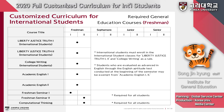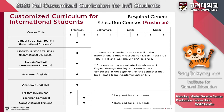Freshmen of Fall 2020 must take Liberty Justice Truth 1 and 2, College Writing, Academic English 1 and 2, Freshman Seminar 1 and 2, and Computational Thinking. Liberty Justice Truth and College Writing must be taken in Class 4 International Students sections, which are determined by your Korean language proficiency level — announced via email. We strongly recommend that students at TOPIK level 2 or lower enroll in the Liberty Justice Truth beginner level and College Writing alongside the Intensive Korean Language Program. Academic English class placement is determined by your English proficiency level.